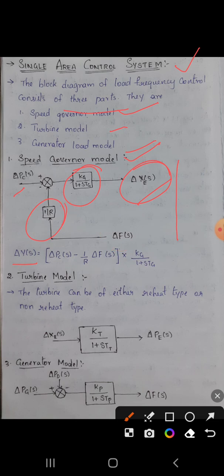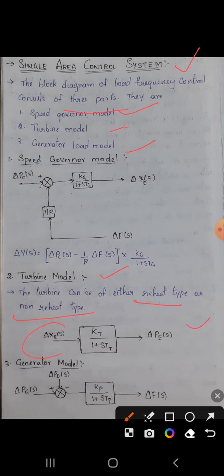Next is the turbine model. In the turbine model there are two types: reheat type and non-reheat type. Here we have two constants, Kt and Tt. The input is delta Xc(s) and the output will be delta P(s).